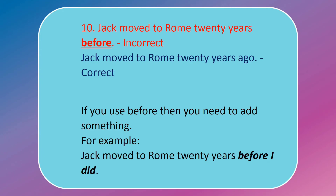Jack moved to Rome 20 years before — this is incorrect. Jack moved to Rome 20 years ago — this is correct. When we mention an amount of time in the past, we use 'ago' and not 'before.' If you use 'before,' then you need to add something. For example: Jack moved to Rome 20 years before I did.